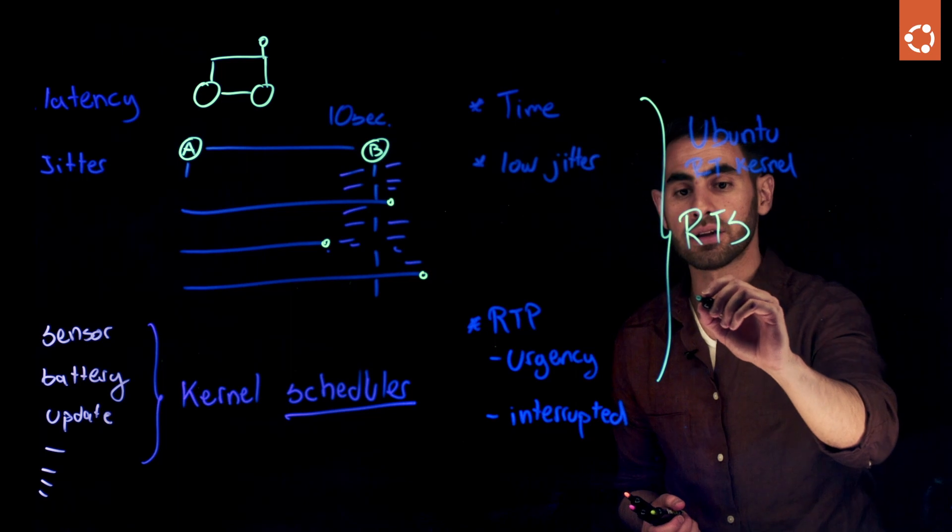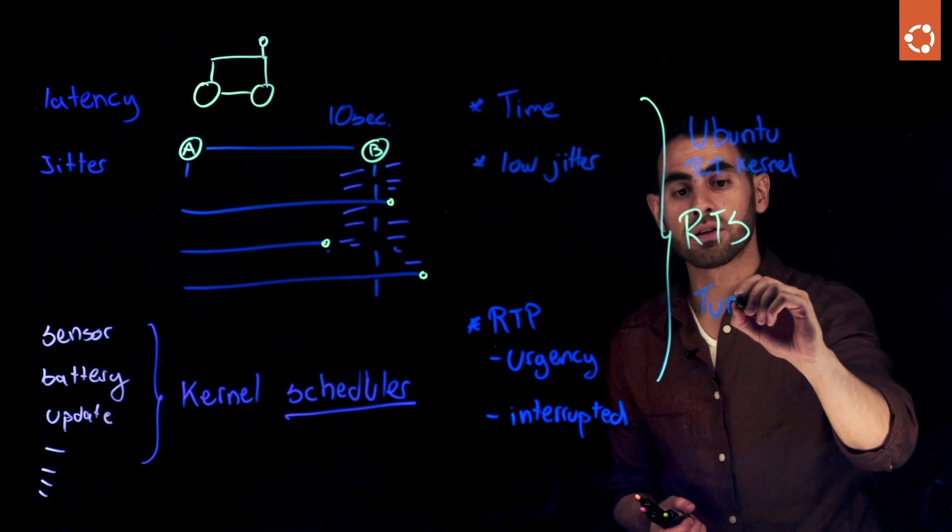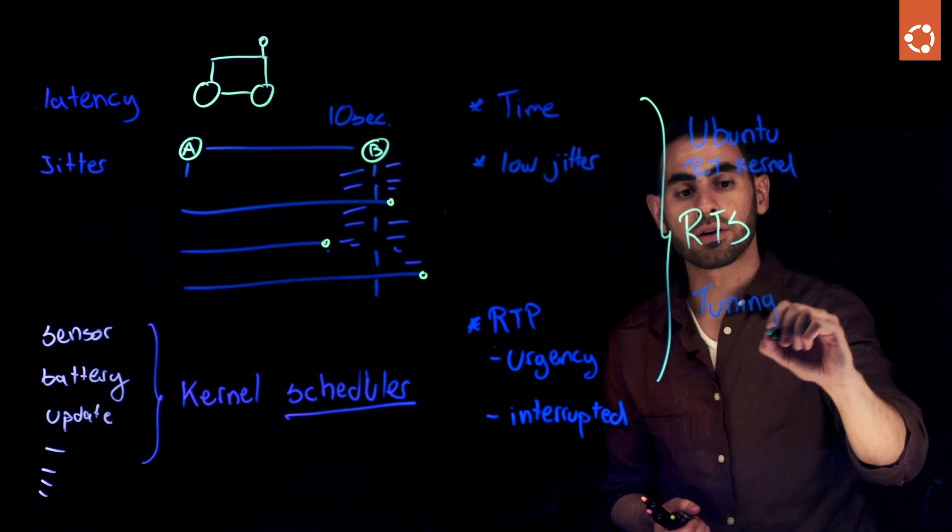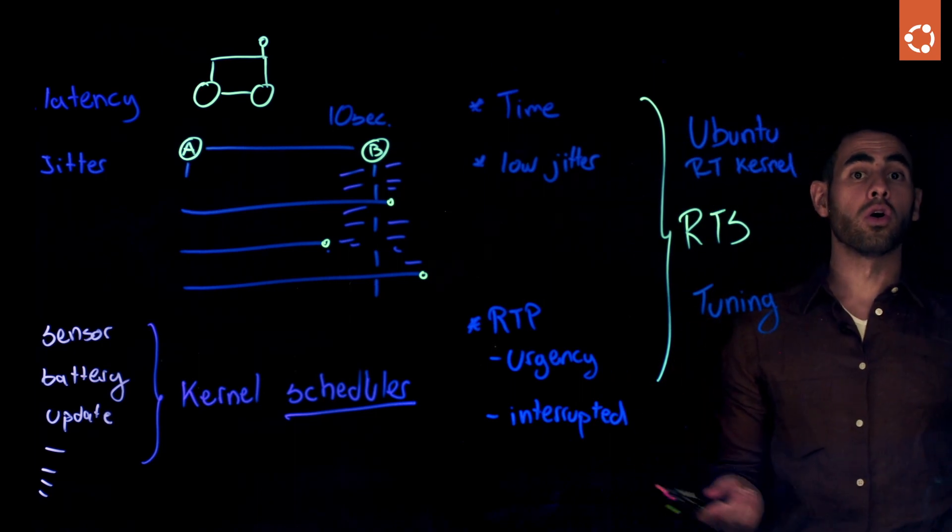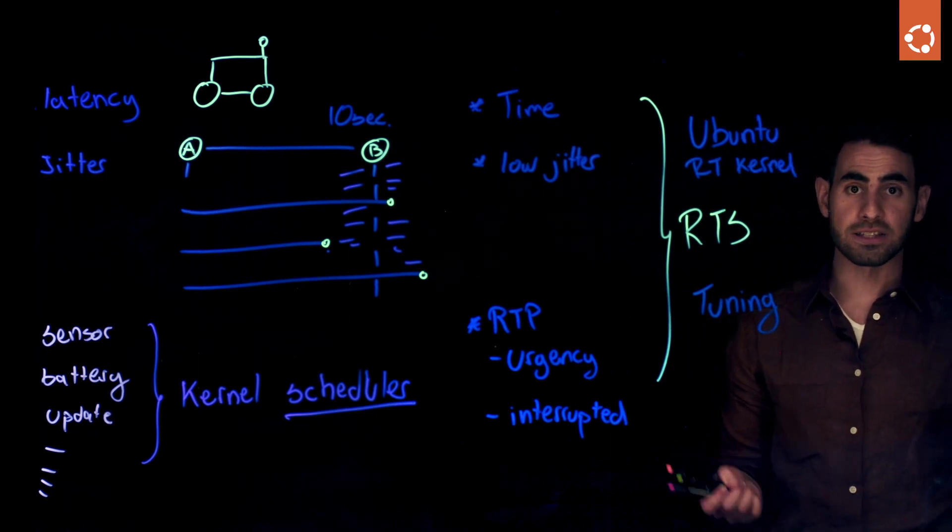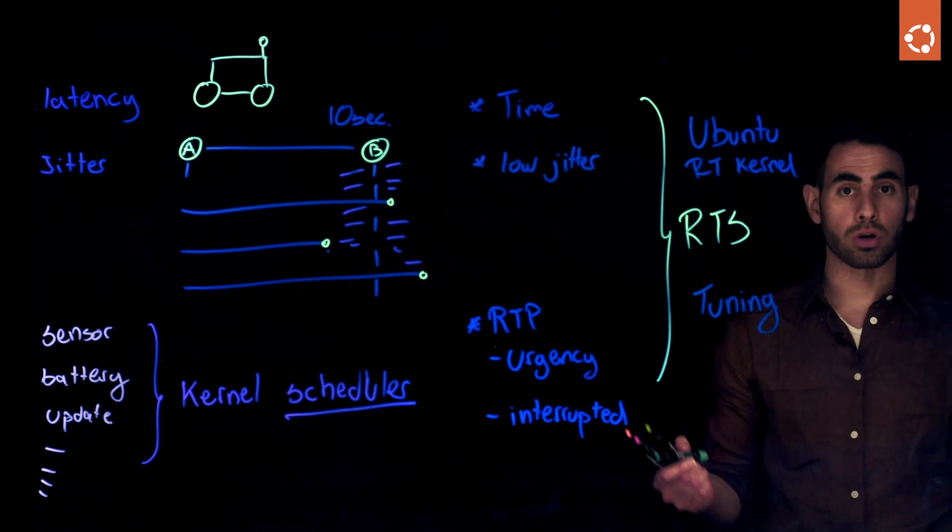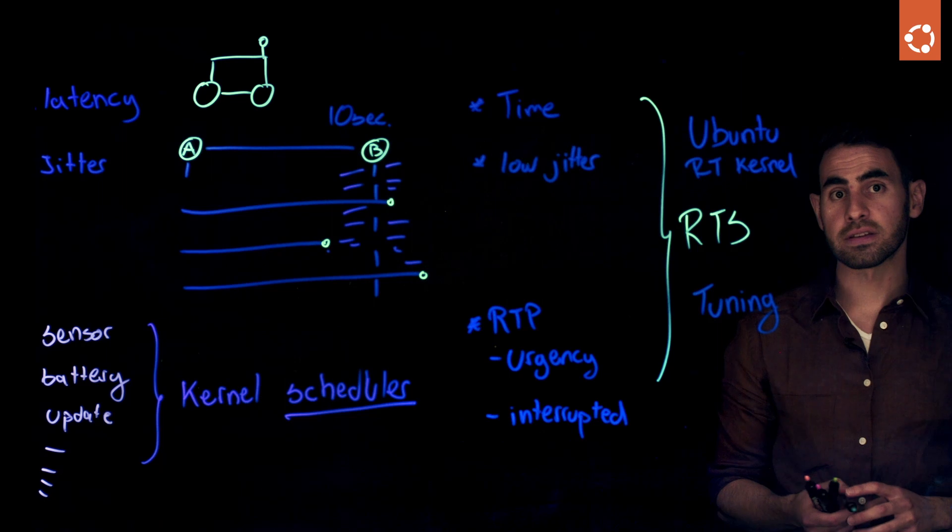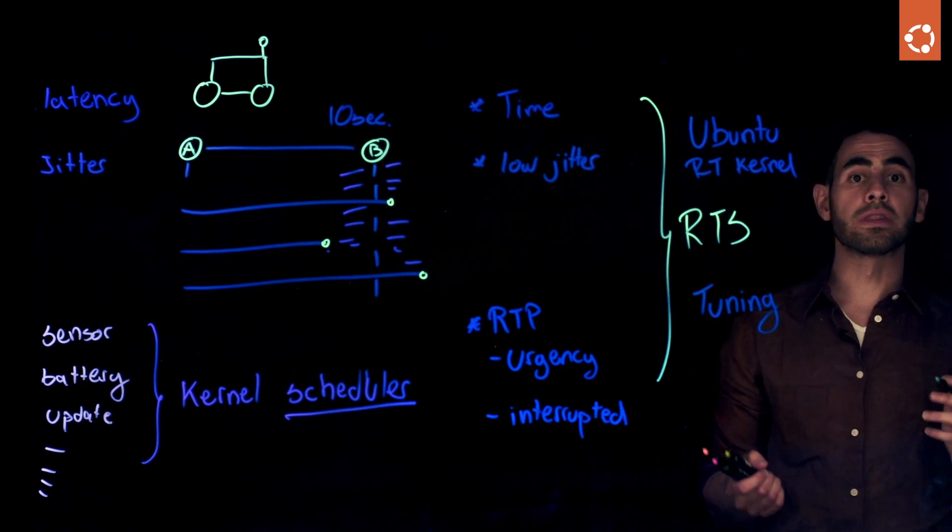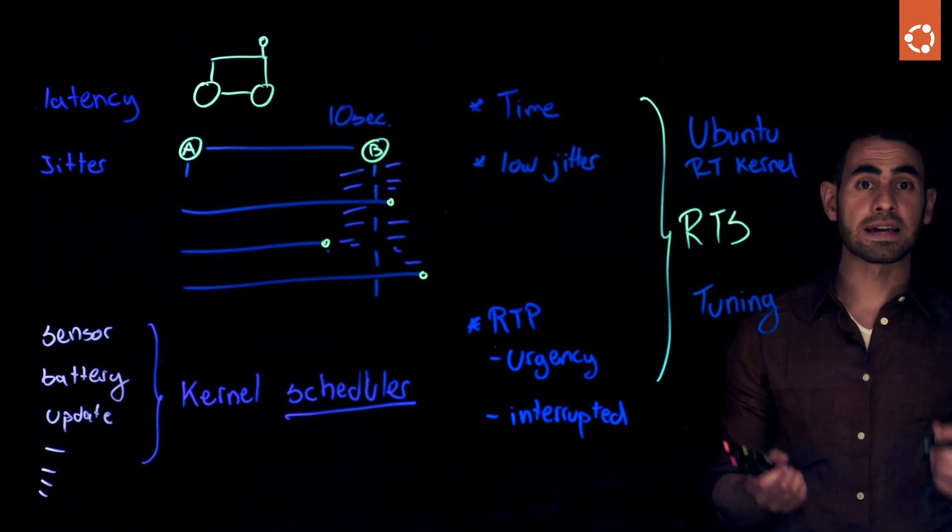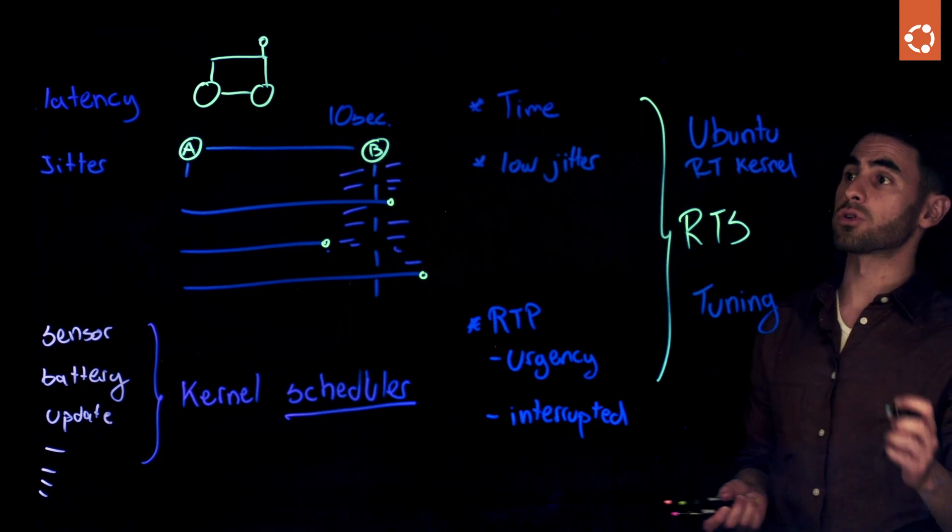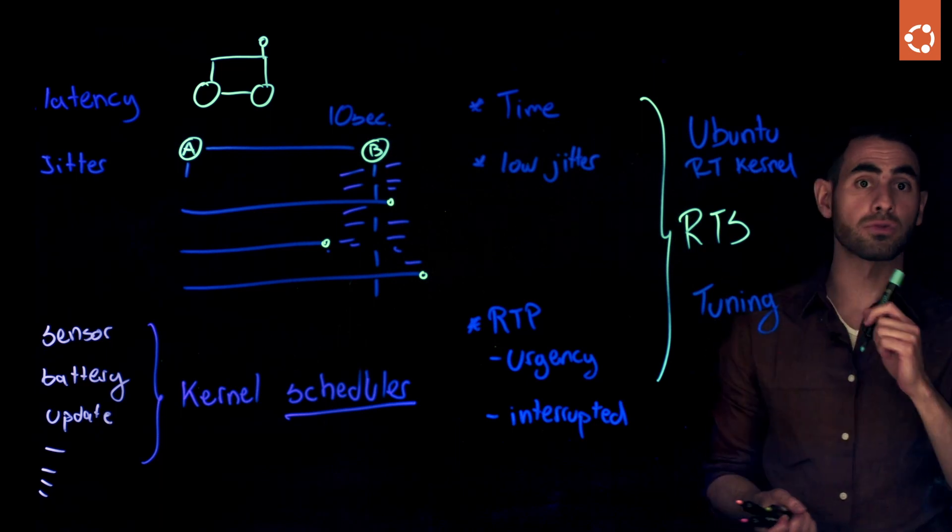The second thing needed is tuning your kernel. Only enabling the real-time kernel is not enough. You need to tune it. Each layer of your workload, each layer of your operating system has to follow the regulations, the guidelines that you apply to each process in terms of latency, in terms of priority.